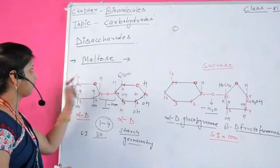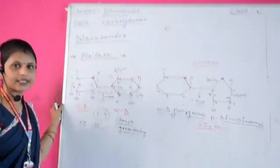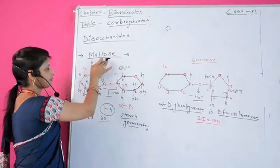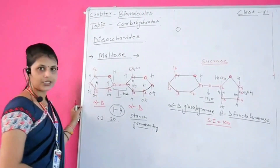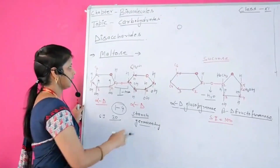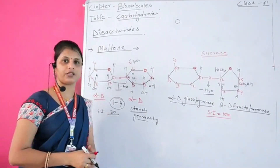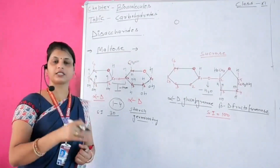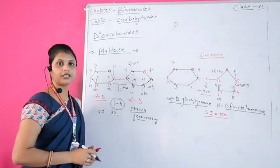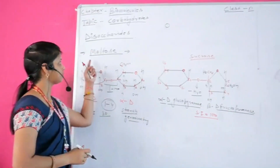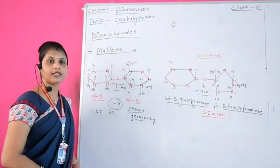We take an example of maltose. Maltose is also an example of a disaccharide. Maltose generally forms by digestion of starch. In the digestion process, starch in the presence of salivary amylase and pancreatic amylase converts into maltose. It is also present in germinating seeds, which also possess maltose sugar.